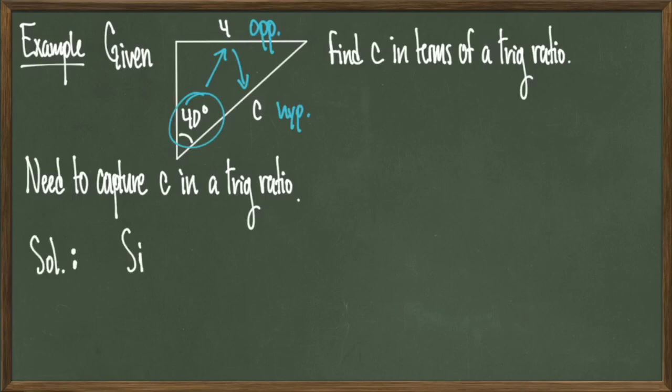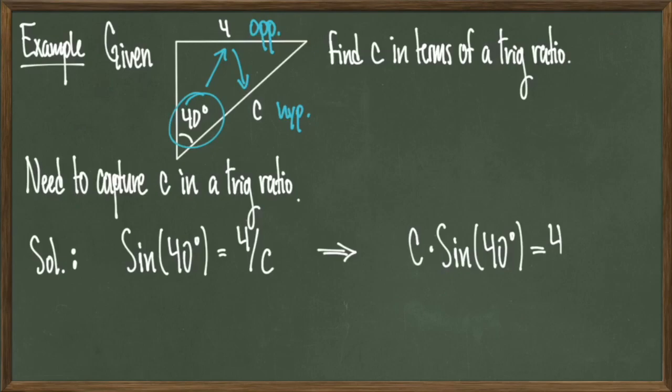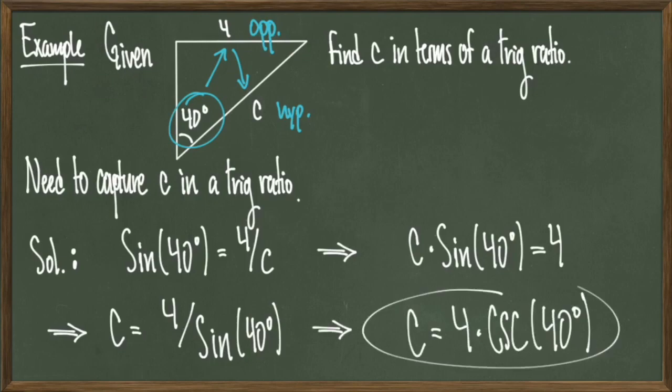One of the trig ratios that involves an opposite side and a hypotenuse is the sine ratio. So we can deduce that sine of 40 degrees has to be equal to 4 over c. All we have to do is explicitly solve for c in terms of a sine function. Doing this, I see that c times sine of 40 degrees is equal to 4, which tells me that c is equal to 4 over sine of 40 degrees.